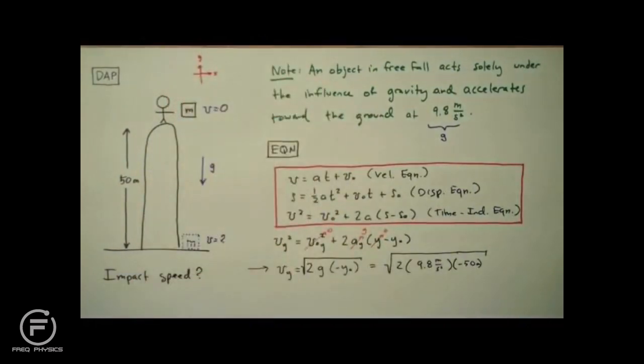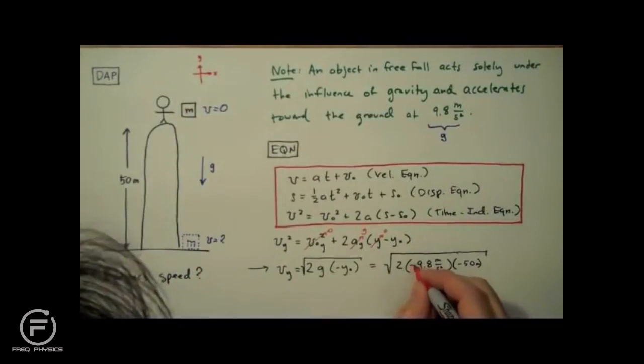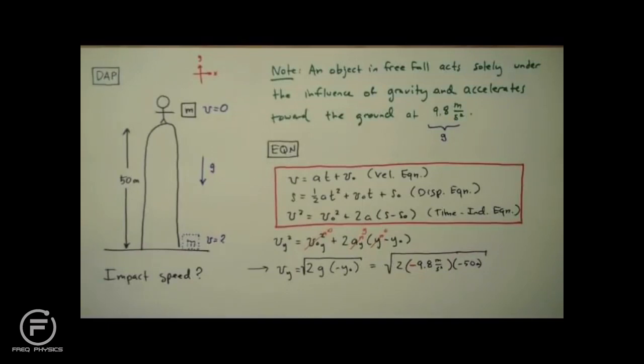Just for funsies. Positive x in the right direction. So this tells us that that value for acceleration is negative. Which makes that product under the square root sign positive. Whew! Averted disaster.